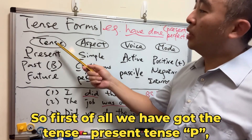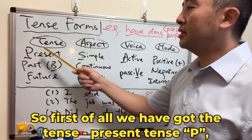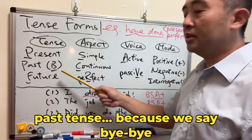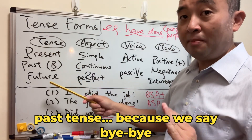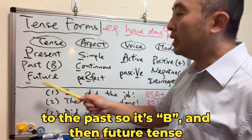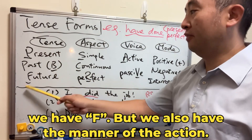First of all, we have got the tense: present tense — P; past tense — because we say bye-bye to the past, so it's B; and then future tense, we have F.